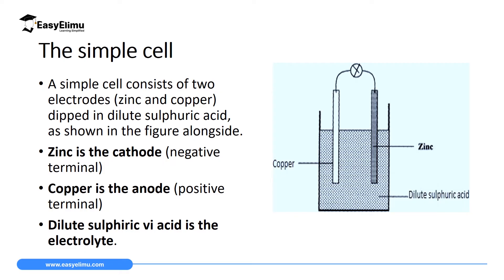The simple cell has two main parts. First, we have two metals dipped inside a solution — these metals we call electrodes. In this case we have copper metal and zinc metal dipped in a solution. Then we have the solution in which these two metals are dipped, and this solution we call an electrolyte. In this case we are going to use dilute sulfuric acid as our electrolyte.